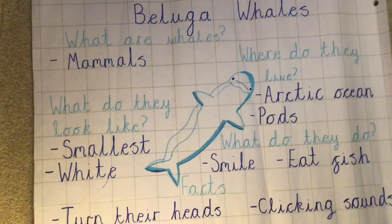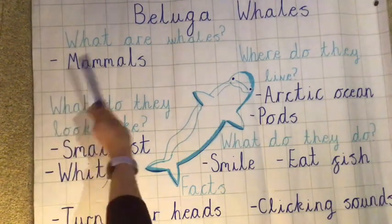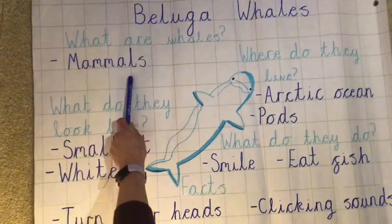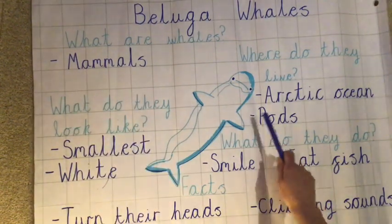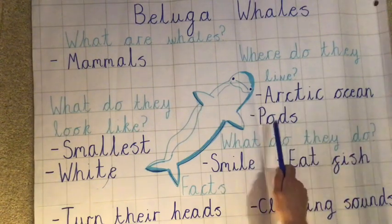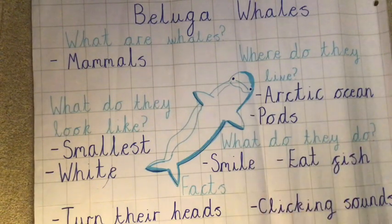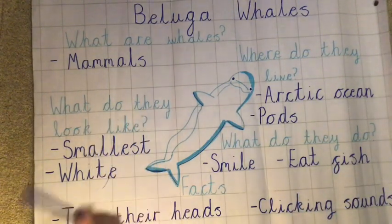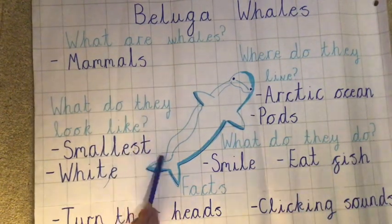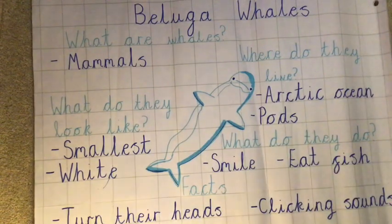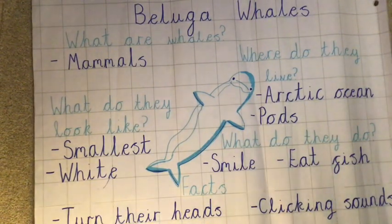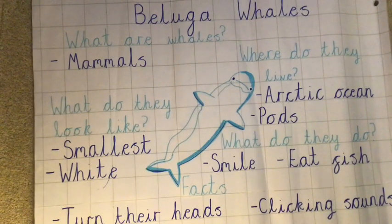There we go — there is my finished mind map. So I know that whales: what are they? They are mammals. Where do they live? In the Arctic Ocean and in pods. What do they do? They smile and they like to eat fish. What do they look like? They're the smallest of the whales and they are white. A couple more fab facts: they can turn their heads and they make clicking sounds. That's my mind map all about beluga whales done.